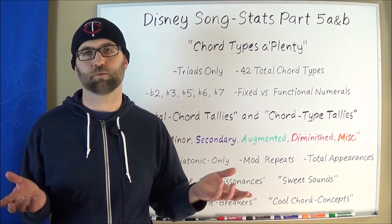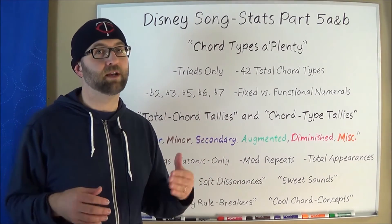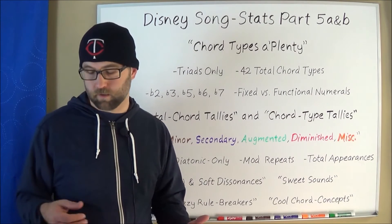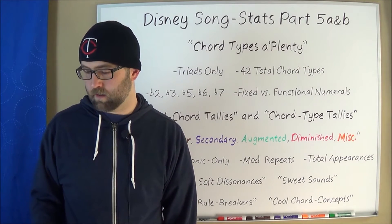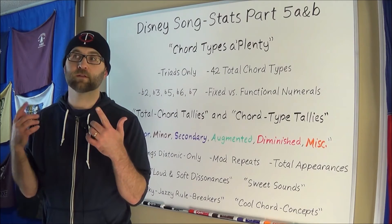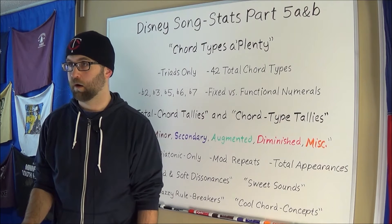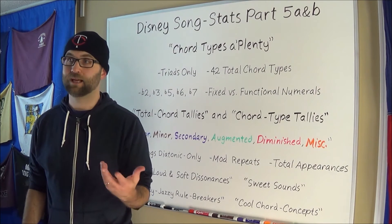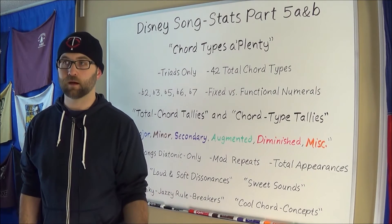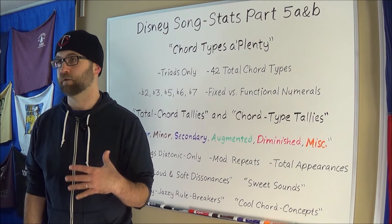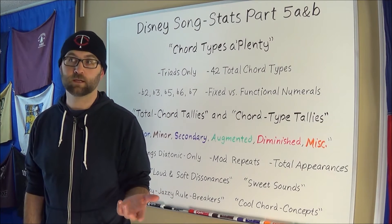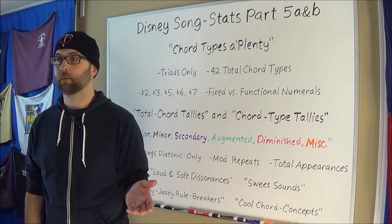Speaking of usage, I did include two tetrads — four-note chords — as honorary triad types, because of how often they are used: the dominant seven, and the four with a dominant seven. Their chord triads are just the one and the four, two of the most common triads. What makes these chords worthy of being separated out into their own chord types is both how they function and how frequently they're used. You can make up your own mind whether I should have included these chords, or maybe other four-note or three-note chords you feel were missing.